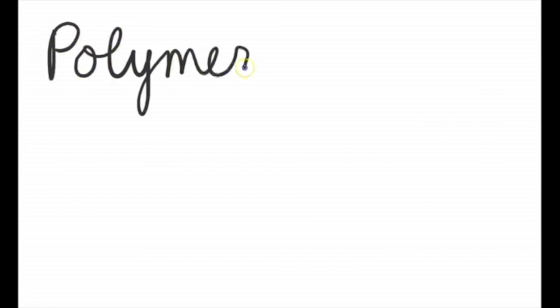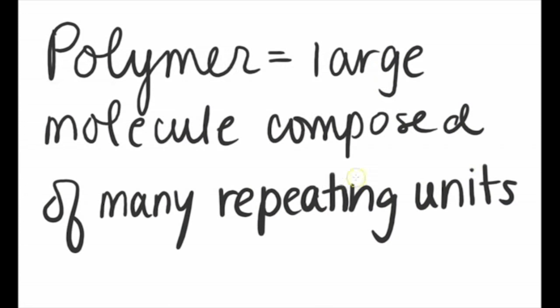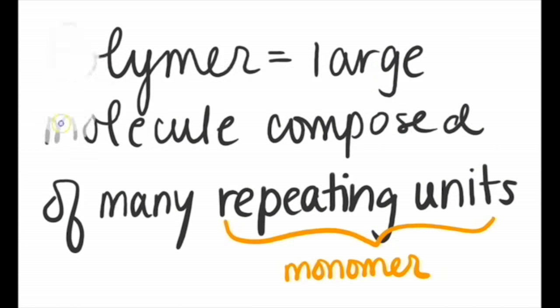Put them together, and the official definition of a polymer is a large molecule composed of many repeated units, which are known as monomers.